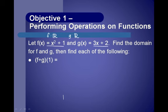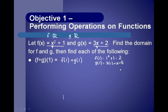Let's find f plus g of 1. By definition, this means f of 1 plus g of 1. f of 1 means substitute 1 for x in the f function: 1 squared plus 1 equals 2. g of 1 means substitute 1 into g: 3 times 1 plus 2 equals 5. So f plus g of 1 equals 2 plus 5, which is 7.